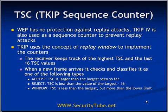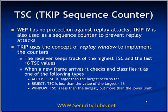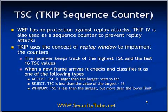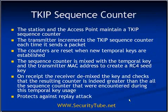When a new frame arrives at the receiver, it checks and classifies the frame into three categories. First, 'accept': if the TSC is larger than the largest seen so far, it accepts and passes the frame to higher layers. Second, 'reject': if the TSC is less than any value in the last 16 largest values, it simply rejects the frame. Third, 'in window': if the TSC is less than the largest but falls within those highest 16 values, it keeps the frame in the window. These TSC counters are always reset when new temporal keys are established, so per session, the TSC starts from 0 and increases monotonically.